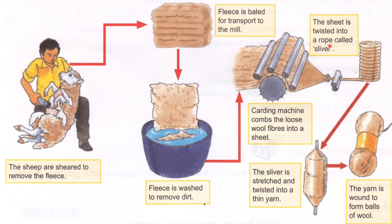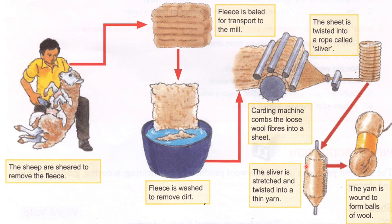After scouring, the fleece is twisted into a rope called a sliver. Then in the carding machine, the loose wool fibers are made into a proper sheet. The sliver is then stretched and twisted into thin yarn. The yarn is wound to form balls of wool.